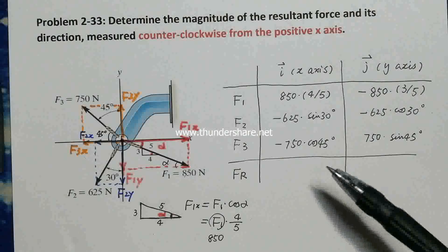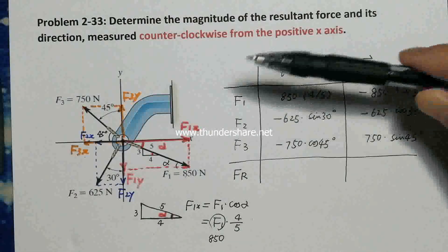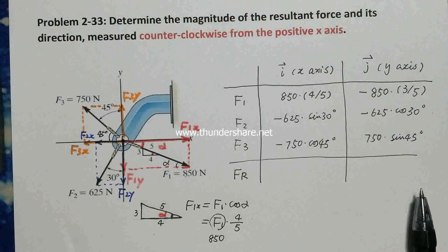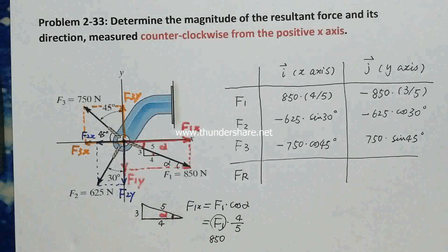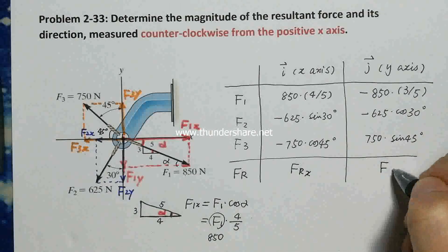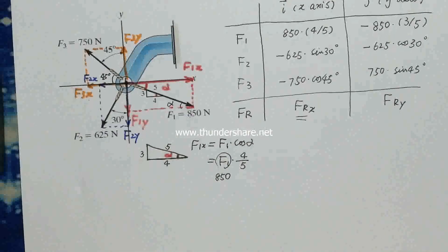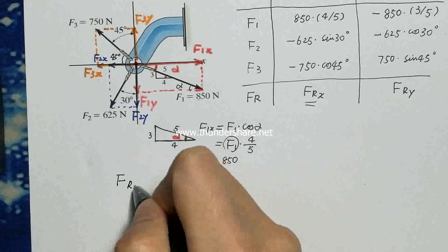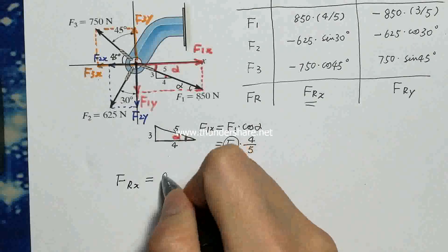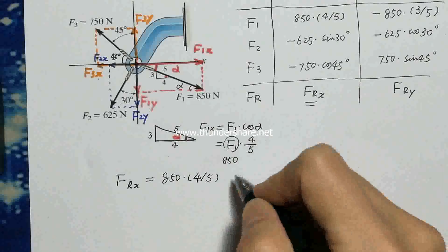Now we've finished step 1 — we've resolved all three individual forces into x and y components, row by row. Now we go to step 2: add the respective components to get the resultant vector, doing column calculations. FRx is the x-component of the resultant force, and FRy is the y-component. For FRx, sum all three x-components. Starting with 850 times 4/5, just copy all these terms carefully.